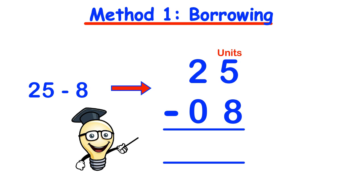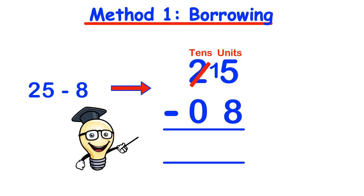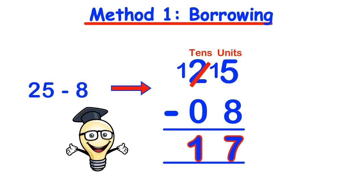In this case, 5 is not bigger than 8, and this cannot be done unless we go into negative numbers. So to avoid that, since 5 cannot take away 8, we borrow 1 from the tens column and add that borrowed 10 to the existing unit, which is 5, to make 15. Now since 15 is greater than 8, we can do the subtraction: 15 take away 8 equals 7. Then we move to the tens column where we just have 1 left — 1 take away 0 is 1. So the answer is 17.